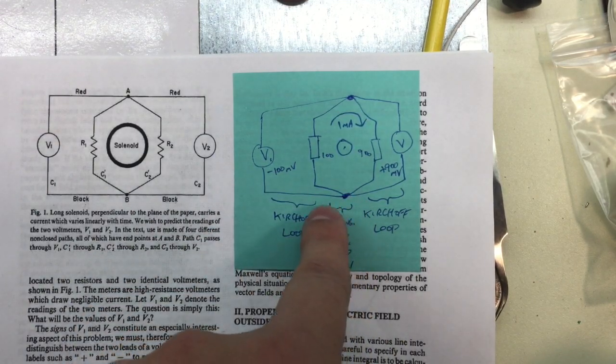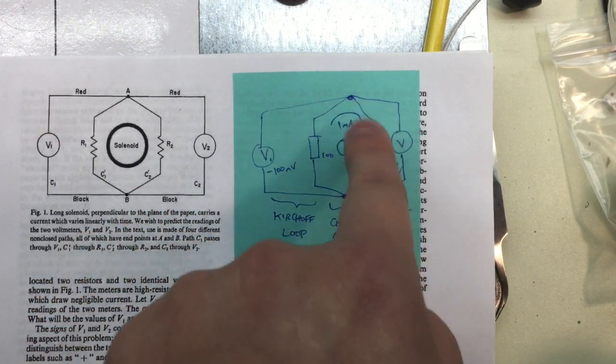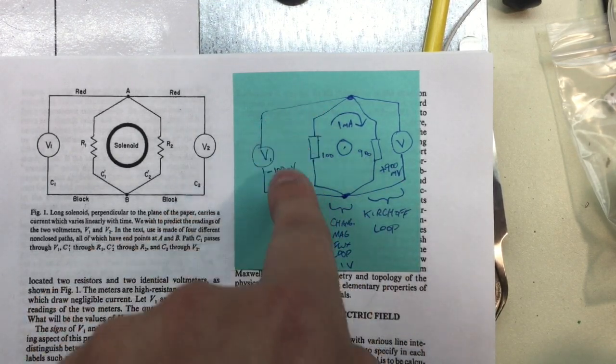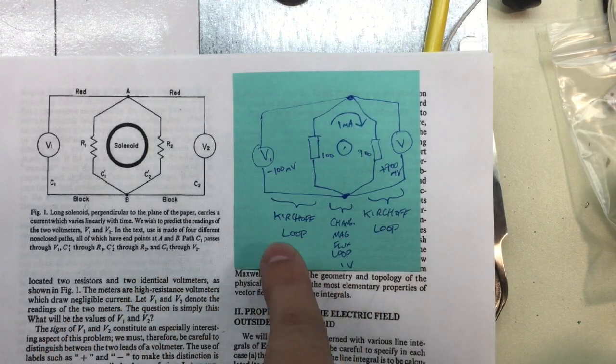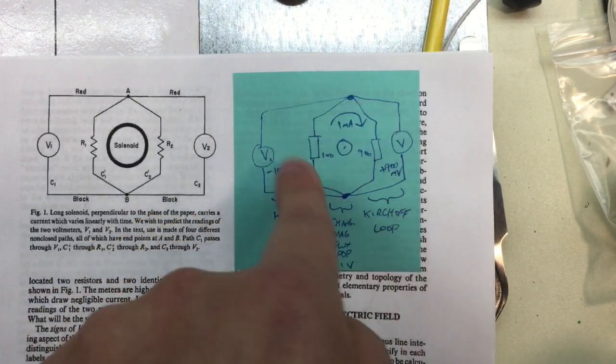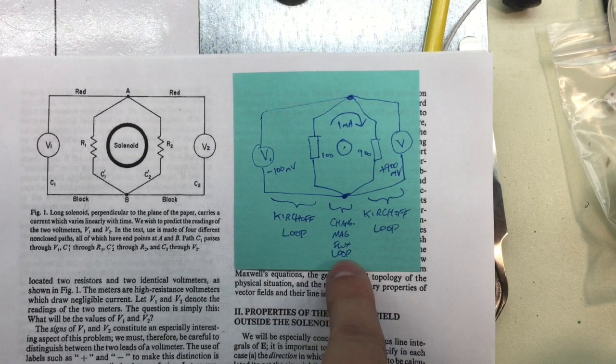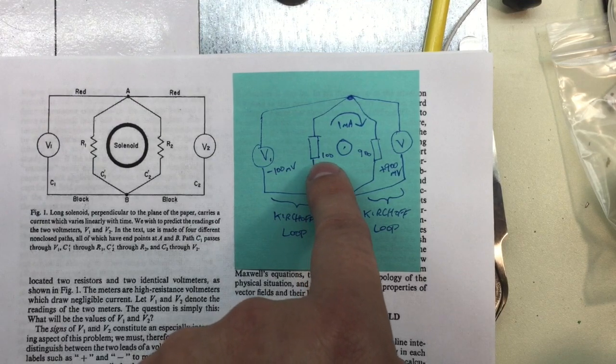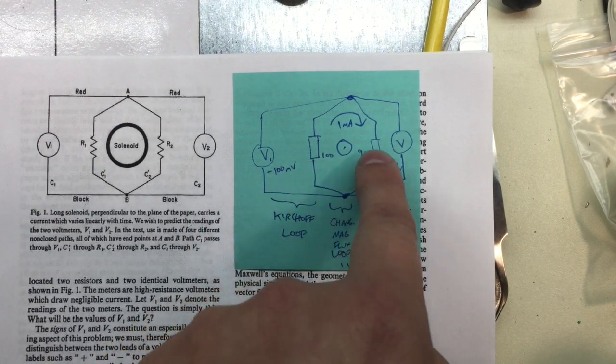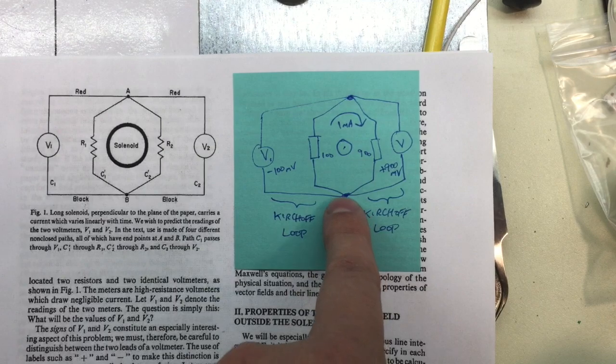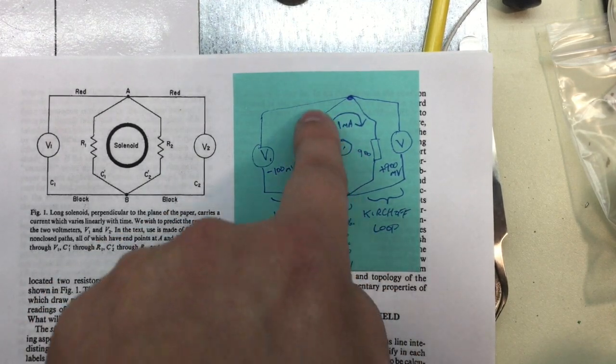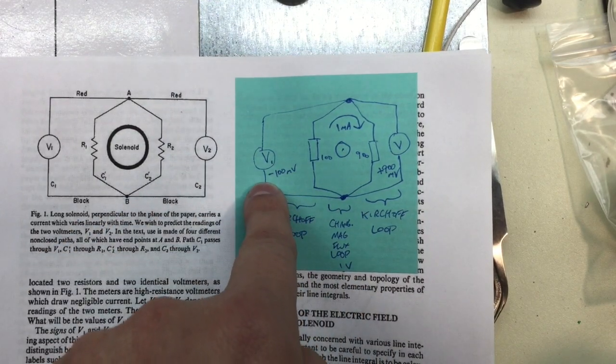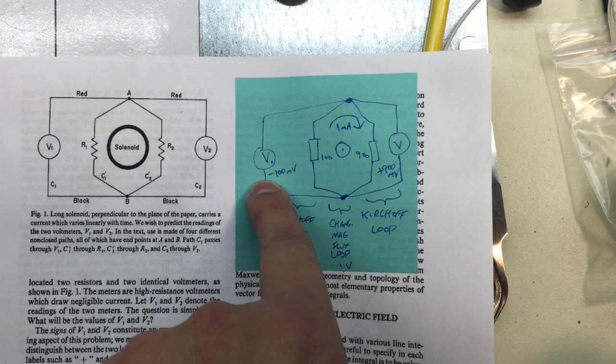So the loops over here to the sides do not go around the solenoid magnetic field. So Kirchhoff's law must hold for these. So this is a Kirchhoff loop. This is a Kirchhoff loop. The middle one here is not. It has a one volt difference. So same as before, we can calculate there's one tenth of a volt across this resistor, nine tenths across this one. And since Kirchhoff's law must apply, we must get to zero. That means this meter here must read negative one tenth of a volt.